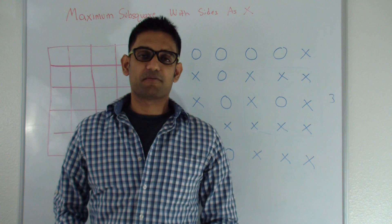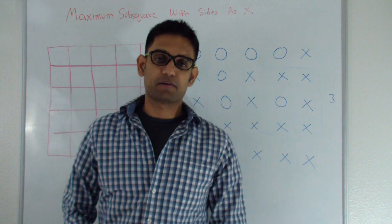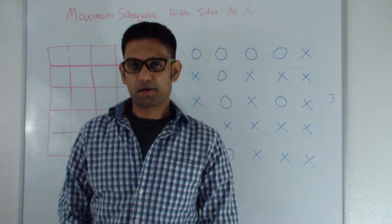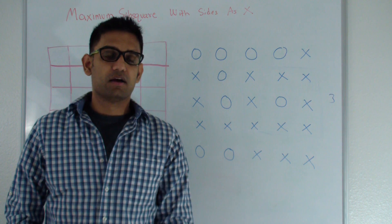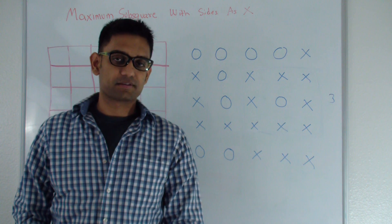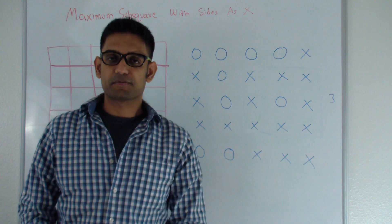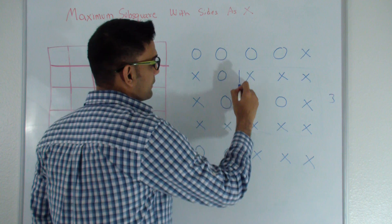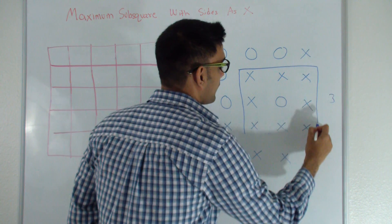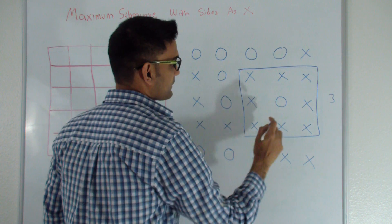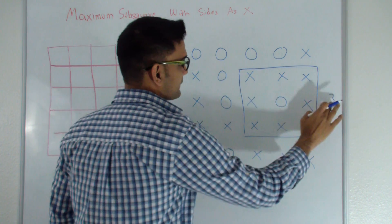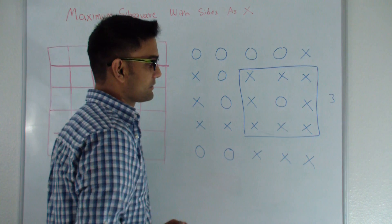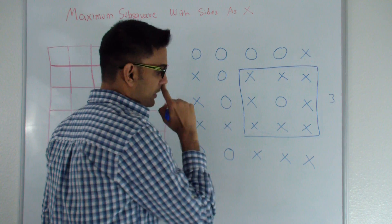Hello friends, my name is Tushar and today we're going to talk about the question: maximum sub-square matrix such that the sides of the square are made up of X's. The question is: given a matrix of zeros and X's, find the largest sub-square matrix inside this matrix such that the sides of this square matrix are all made up of X's. It doesn't matter what's inside the square — it could be zeros or X's — as long as the sides are all made up of X's.